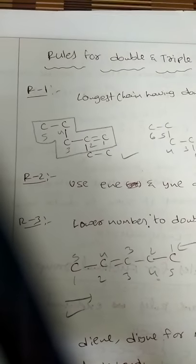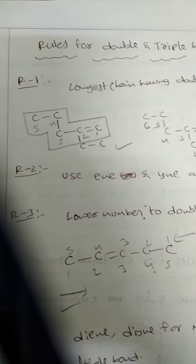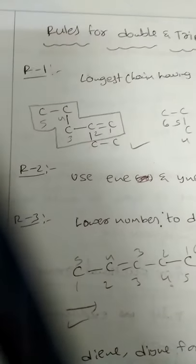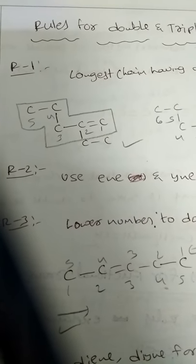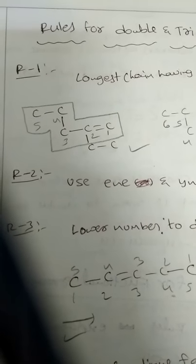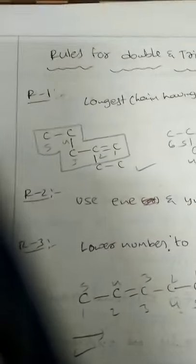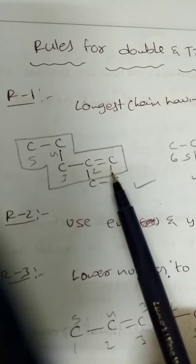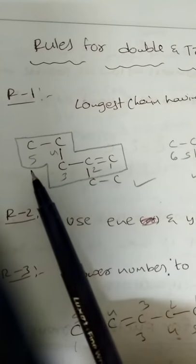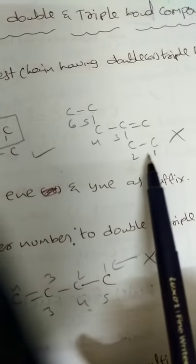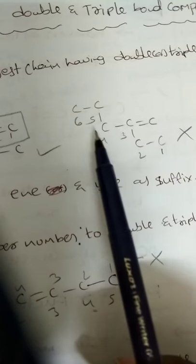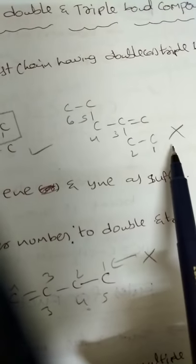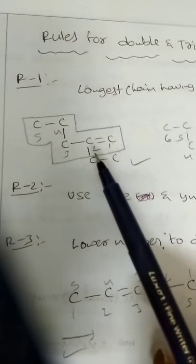Rule 1: the longest chain must contain the double bond or triple bond. So whenever a double bond is present in a chain, you have to consider only the longest chain that contains the double bond. For example, numbering 1-2-3-4-5 is correct. If you take a different direction 1-2-3-4-5-6 where the parent chain has no double bond included, that is the wrong representation. So this is Rule 1.